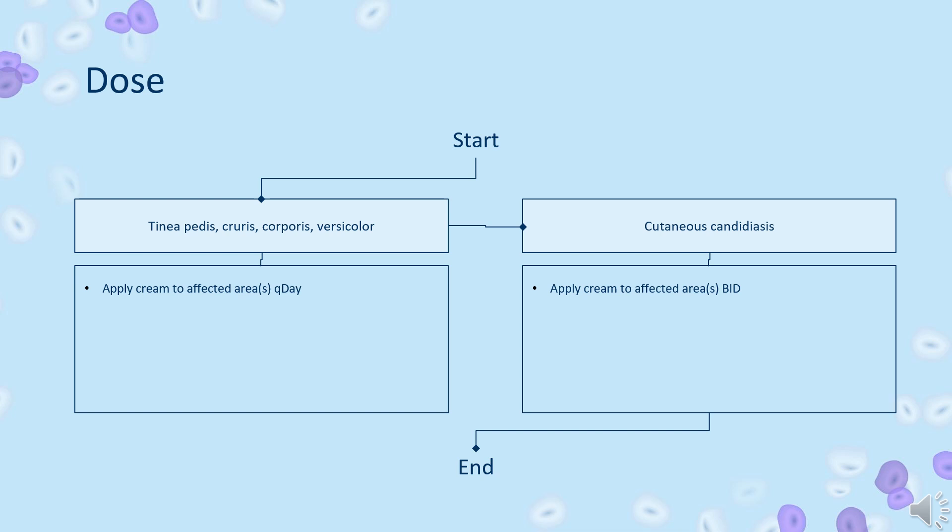For tinea pedis, cruris, corporis, and versicolor, apply cream to affected areas once daily. For cutaneous candidiasis, apply cream to affected areas. Treatment duration: tinea cruris, corporis, versicolor, and cutaneous candidiasis — apply for 2 weeks; tinea pedis — apply for 4 weeks.